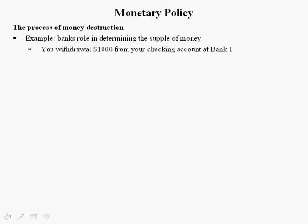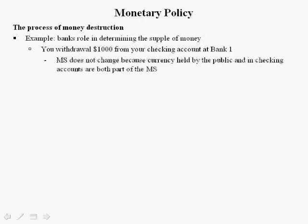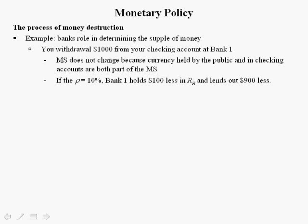Withdrawing money from a bank and putting it in your mattress destroys money. Suppose you walk into the bank and withdraw $1,000 from your checking account at Bank 1. The money supply doesn't change immediately because currency held by the public and checking accounts are both part of the money supply. However, since the reserve requirement ratio is 10%, Bank 1 now holds $100 less than required reserves and lends out $900 less.